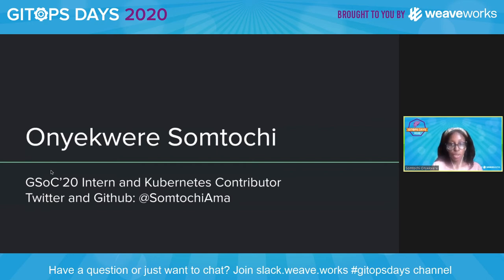Thank you, and thanks to the WeWorks team for inviting me to talk and giving me this opportunity to talk about something I've worked on. I'm really grateful. My name is Onye Kurei Sumtochi and earlier this year I was a Google Summer of Code intern with Kubernetes, and I'm a contributor to Kubernetes too. You can find me on Twitter and GitHub at Sumtochi Amaa.